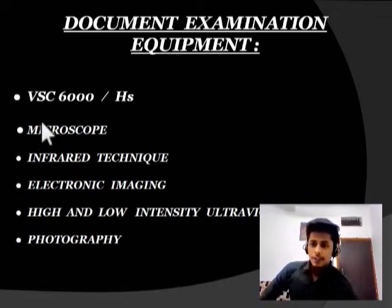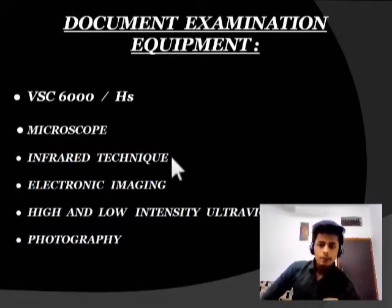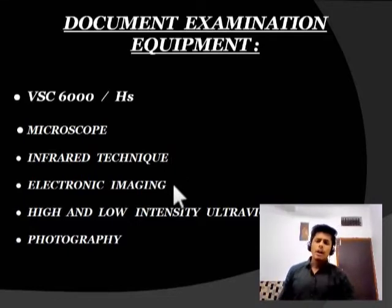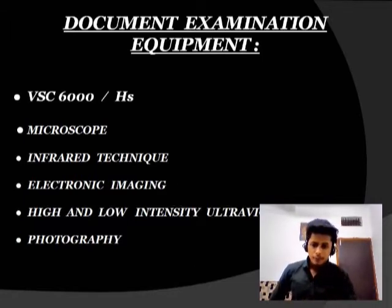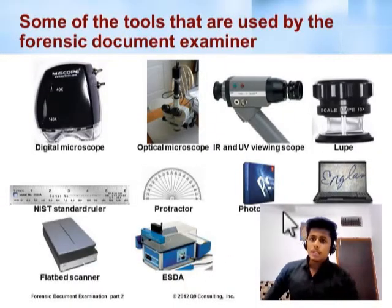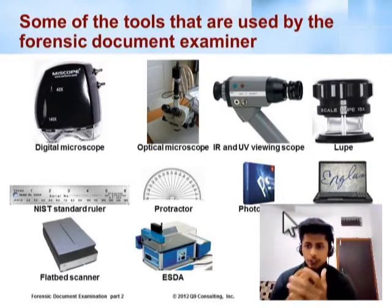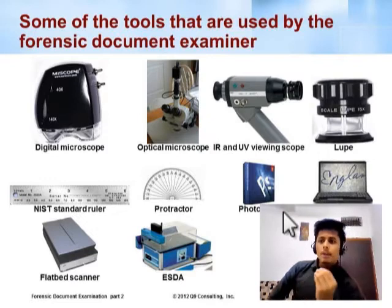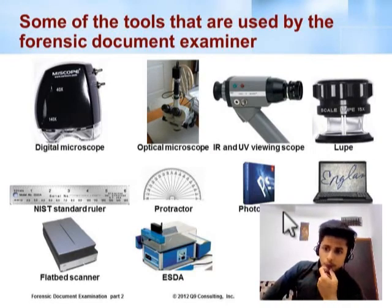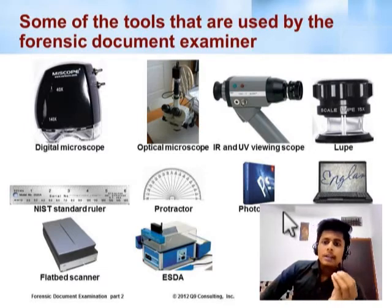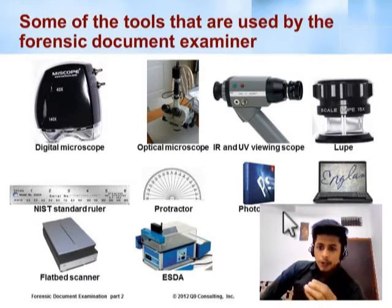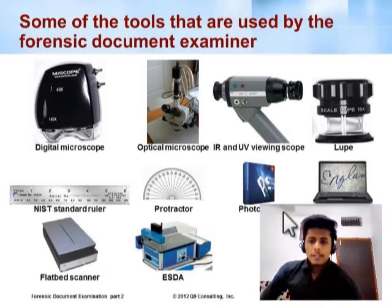Equipment used for document examination includes the VSC 6000, microscope, infrared technique, different ink analysis, electronic imaging, high and low intensity lighting, ultraviolet light, and photography. Tools used by a forensic document examiner include digital microscope, optical microscope, IR and UV viewing scope, light projector, ESDA, and VSC is also used.